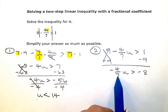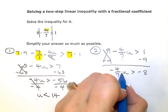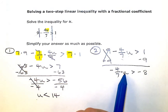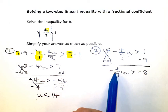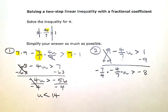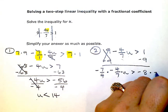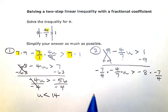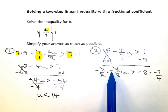Now I need to get rid of this coefficient, negative four-sevenths. Remember, there's an implied multiplication sign there — this is really negative four-sevenths times u. The opposite would be to divide by negative four-sevenths, but when you divide fractions, that means to multiply by the reciprocal. So I'm going to flip it and multiply by negative seven-fourths on both sides. Since I'm multiplying by a negative number, when I simplify I'm going to flip my sign. On the left, the entire fraction cancels out, and negative times negative leaves me with a positive u.